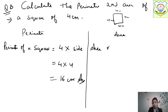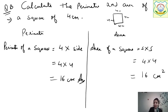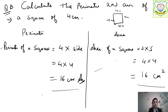Now for area: area of a square = side × side = 4 × 4 = 16. But the unit here is centimetres × centimetres, so the answer is 16 square centimetres. Both answers came the same number, but this is perimeter so the unit is centimetres, and area uses square centimetres — you have to take care of this.